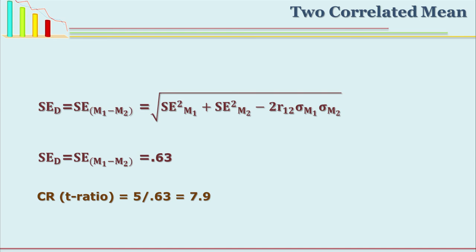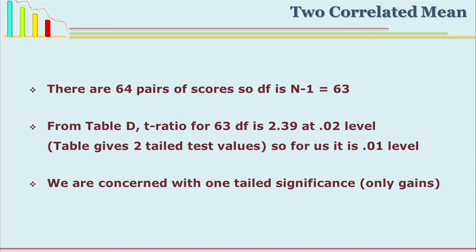Now we have to see whether this critical ratio is significant or not. We use Table D. In Table D the first column is degrees of freedom. We have 64 scores, so degrees of freedom is N minus 1, which is 63. In the first column, find degrees of freedom 63, and find what is the probability for 0.95 or 0.99 level. You will see that for 63 degrees of freedom, the T ratio value is 2.39 at the 0.02 level.